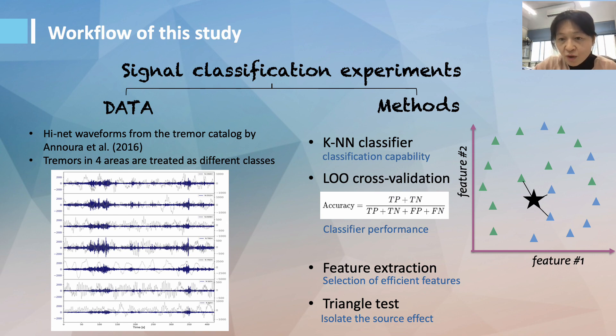As the tremors in the four areas are treated as different classes, we use the simple supervised classifier called KNN that tells you which class an unknown sample belongs to based on the distance to the nearest neighbors in the tremor space. As an example shown here, the unknown sample, the star, should be classified into class blue because two out of three nearest neighbors belong to blue.